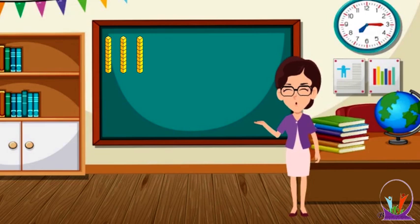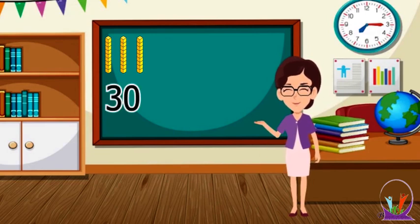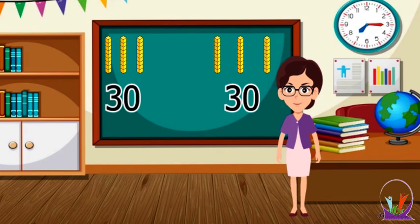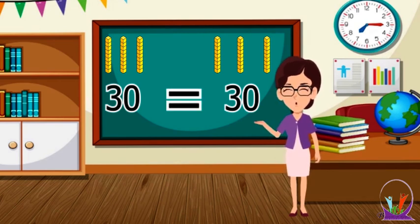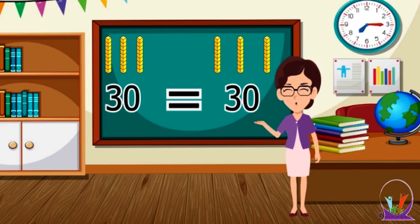Here, there are three tens, which means 30. And here, also, there are three tens, which means 30. So 30 equals 30.